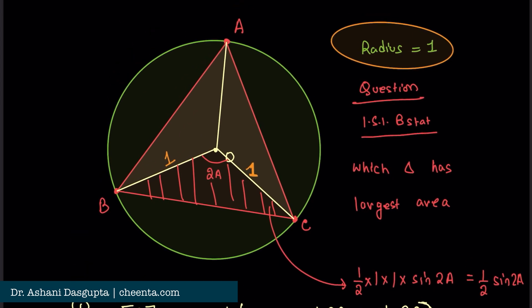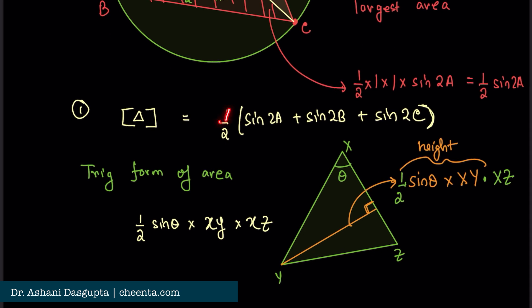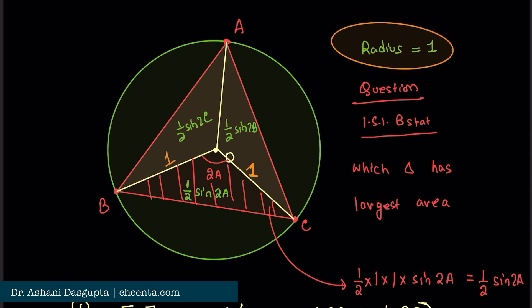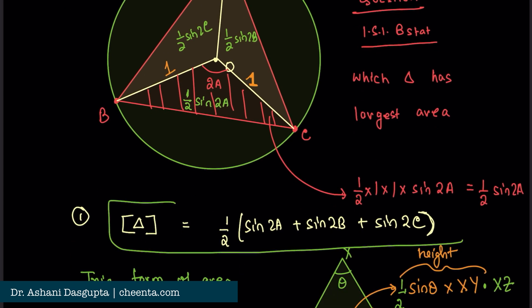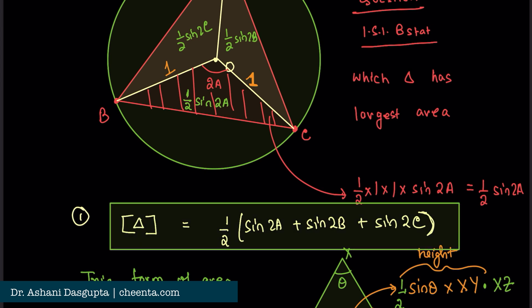So this small triangle has area half sin 2A — a useful formula to keep in mind. Similarly, the next triangle has area half sin 2B, and the third has area half sin 2C. So the area of the entire triangle ABC is half times (sin 2A + sin 2B + sin 2C). Remember, this holds only for a unit radius circle. As a challenge, if the radius is r, can you find the general form of this area formula? Put your answer in the comments.